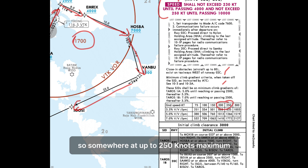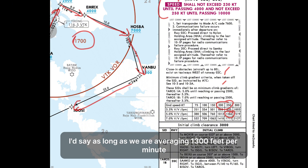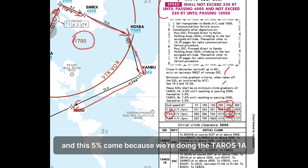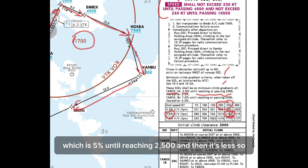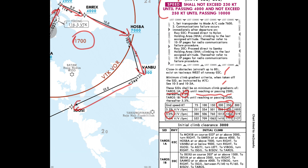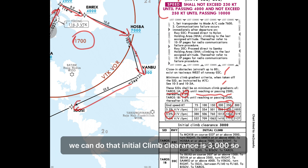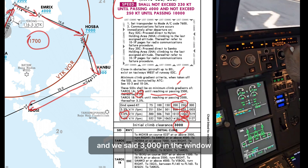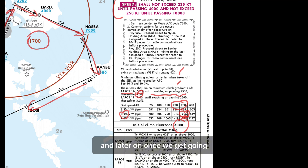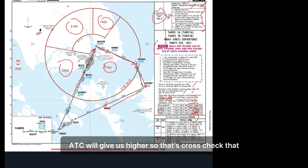Obstacles and minimum climb gradients: we're going to be between 200 and 250 knots, so 1300 feet per minute is the magic number. As long as we're averaging 1300 fpm, we're going to achieve our 5% gradient. That 5% comes from the TOROS 1 Alpha departure, which requires 5% until reaching 2500 feet and then less after that. Initial climb clearance is 3000 feet, so we set 3000 in the window and ATC will give us higher once we get going.